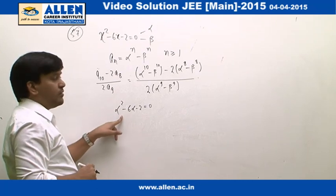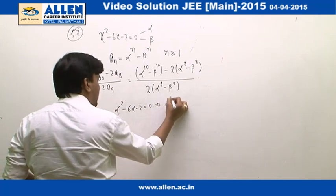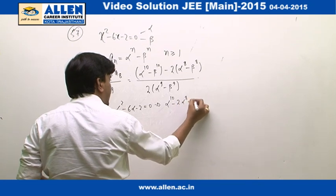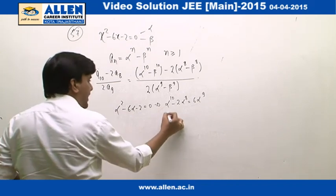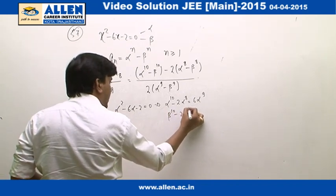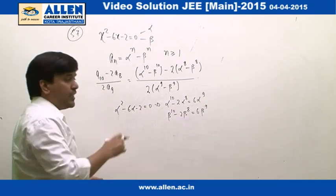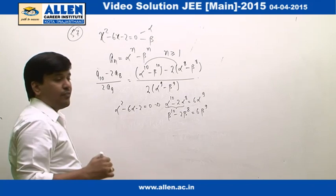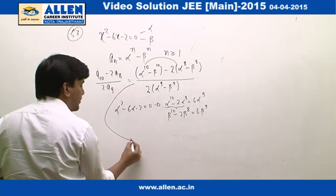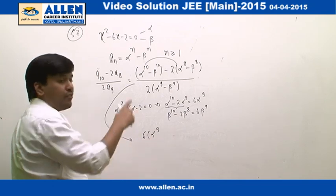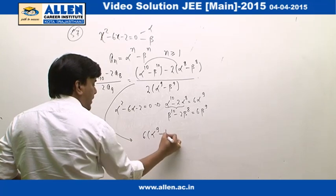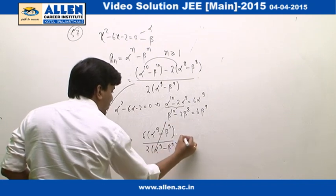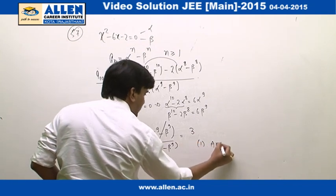Similarly, we have the same relation for beta: beta to the power 10 minus 2 beta raise to power 8 equals 6 beta to the power 9. Subtracting these equations, we get (alpha^10 - beta^10) - 2(alpha^8 - beta^8) = 6(alpha^9 - beta^9). This means a_10 minus 2 times a_8 equals 6 times a_9. Dividing by 2 times a_9, this will cancel out to give us 3, and hence the correct answer is 1.